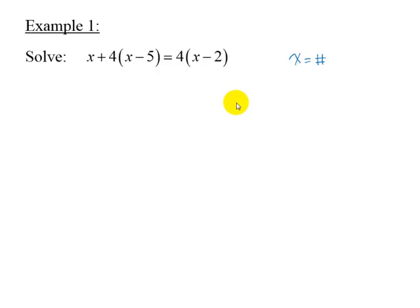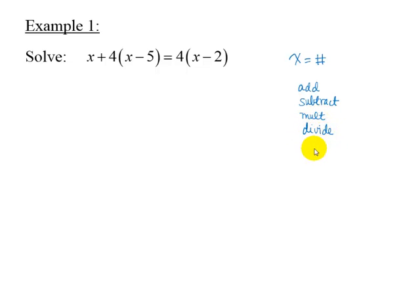The addition and multiplication properties tell us that we can add or subtract the same number from each side of the equation, or multiply or divide each side of the equation by the same non-zero number. Basically remember this rule: what you do to one side of the equation, you must do to the other. We have to balance, that is maintain the equality of the two expressions of the equation.